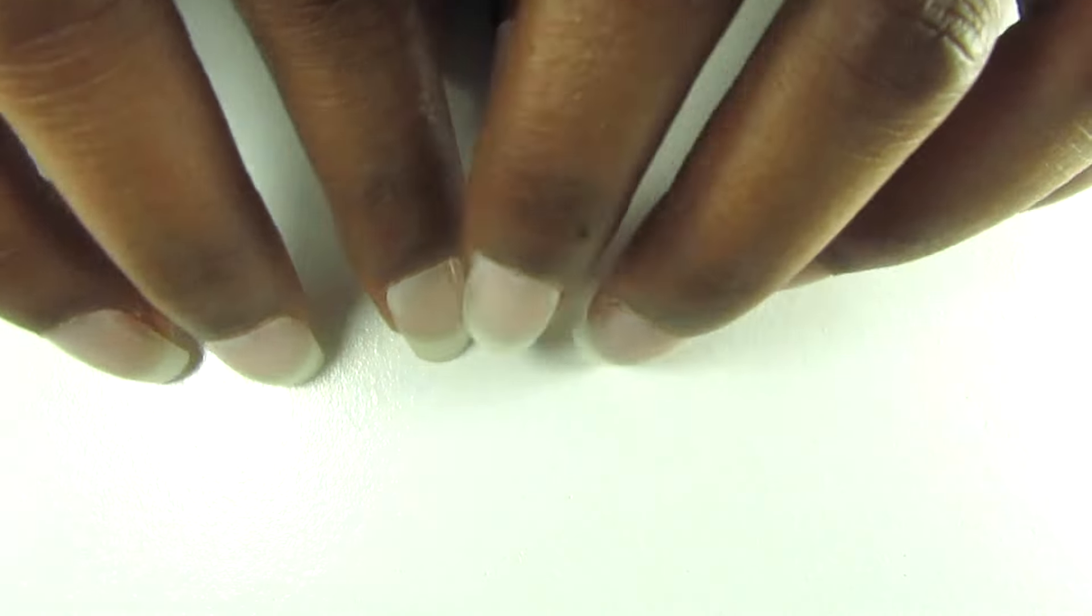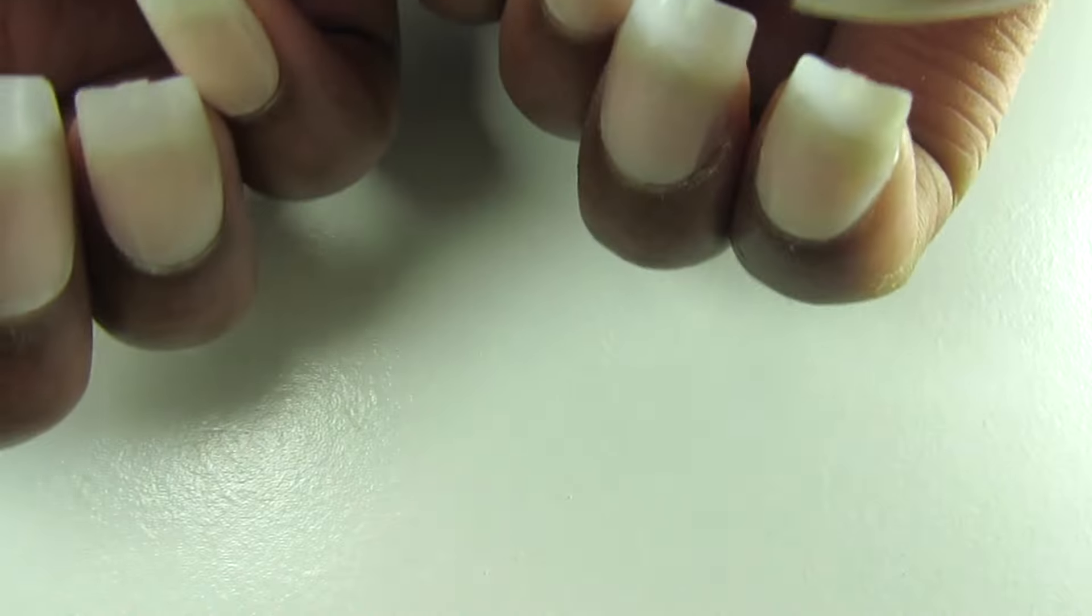This is what the nails look like after they're all applied. Now we're going to file them if needed. I'm just going to do a kind of square, almost kind of coffin shape but not completely. I'm not very good at filing but I'm still learning.